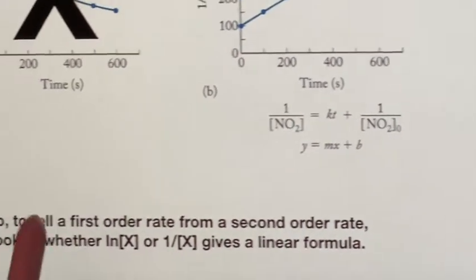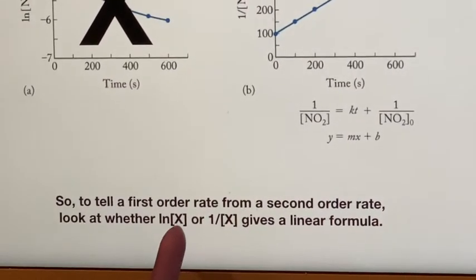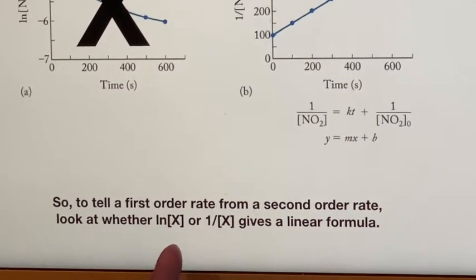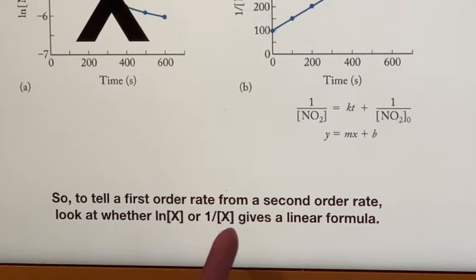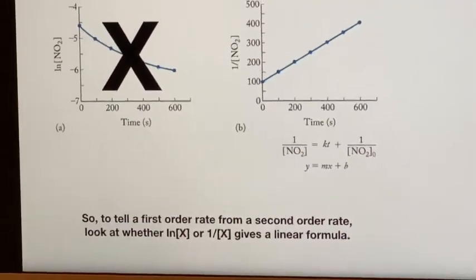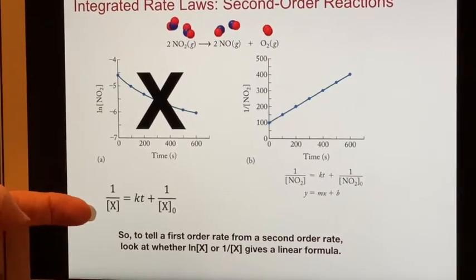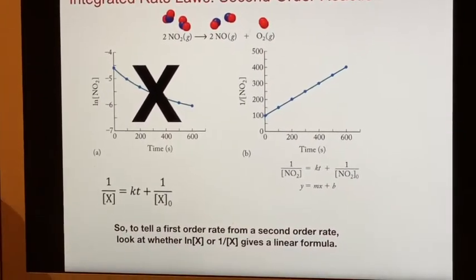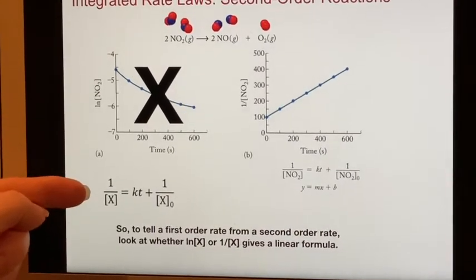So what you're really trying to determine is: does the logarithm of X plotted against time, or does one over the concentration of X versus time, give you a linear formula? There it is in terms of a general substance X — that's your second order integrated rate law.